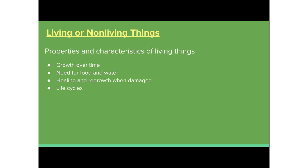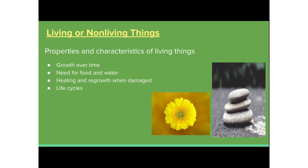Living things also have a life cycle, such as going from a seed to a sprout to a plant, or growing from a baby to a child to an adolescent to an adult. By knowing these properties and characteristics, children can learn to distinguish between things that are living and things that are not — for example, identifying that a flower is a living thing and rocks are not.